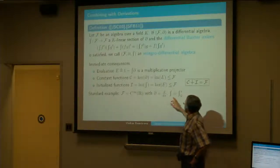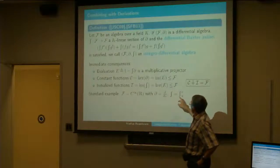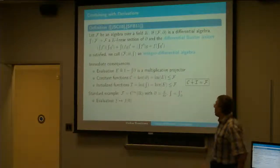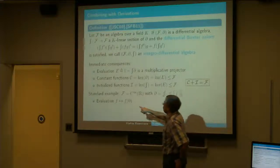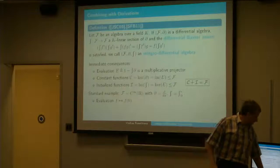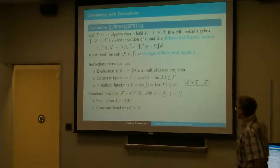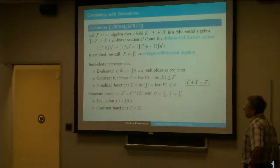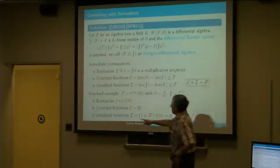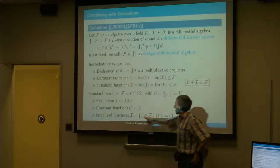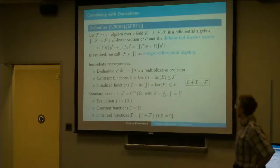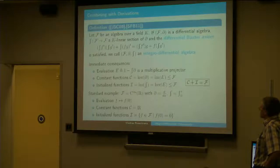So in the standard example of smooth functions, the derivation is the usual one, and the integral is just integrating from zero to x. The evaluation is what you would expect — we evaluate the function at the initialization point zero. The constant functions are exactly the constant functions in the analysis sense. And the initialized functions — that ideal I — is exactly those functions that satisfy the initial condition at zero. So that's why I call it the initialized ideal.